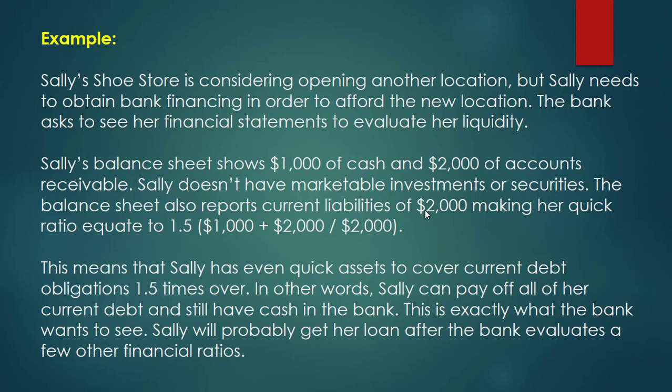In other words, Sally can pay off all her current debt and still have cash in the bank. This is exactly what the bank wants to see. Sally will probably get the loan after the bank evaluates a few other financial ratios.